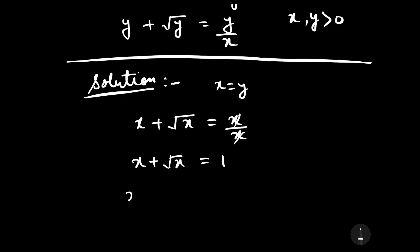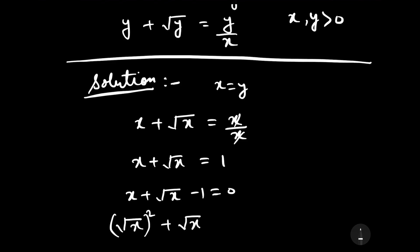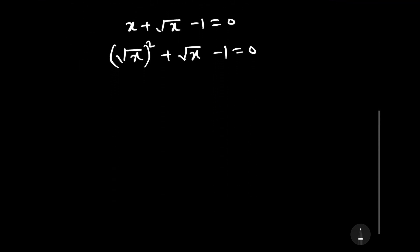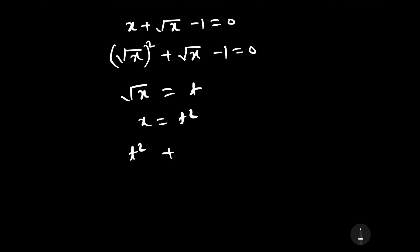This can be written as x plus √x minus 1 equals 0, or equivalently (√x)² plus √x minus 1 equals 0. Let us consider √x as t, so x equals t². Substituting, we have t² plus t minus 1 equals 0.